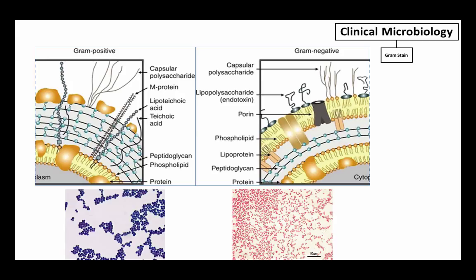What the Gram stain is doing is it's separating bacteria into one of two groups based on their composition of the cell wall, specifically the presence of this thick peptidoglycan layer that is characteristic of Gram-positive bacteria.